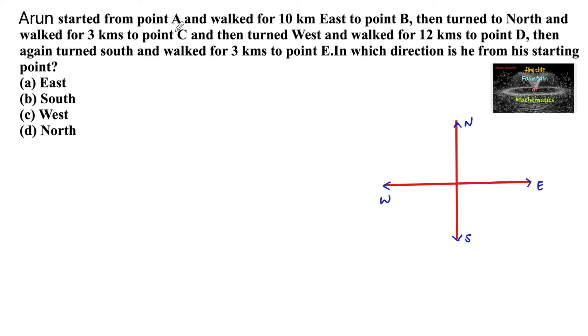Arun started from point A and walked for 10 km east to point B, then turned to north and walked for 3 km to point C, and then turned west and walked for 12 km to point D, then again turned south and walked for 3 km to point E. In which direction is he from his starting point?